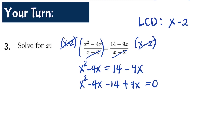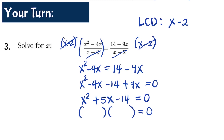Remember: when you transfer a term to the other side, you always change its sign. Writing in standard form: x² + 5x - 14 = 0. Solving by factoring, we find factors of -14 that sum to 5: positive 7 and negative 2, since (7)(-2) = -14 and 7 + (-2) = 5. So we have (x+7)(x-2) = 0.